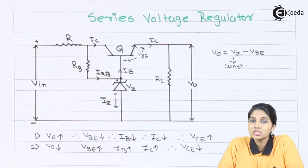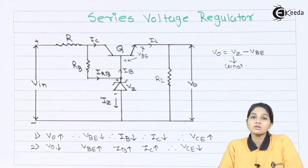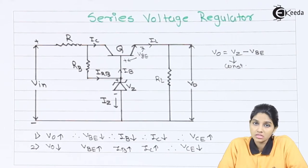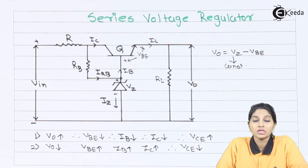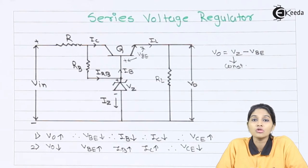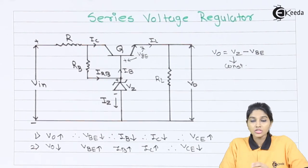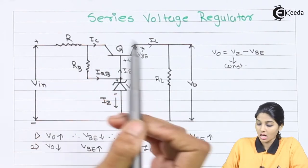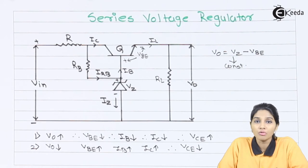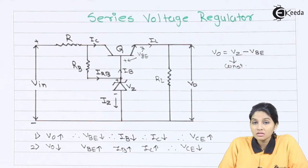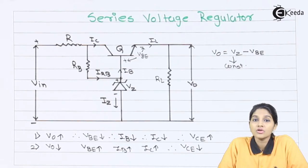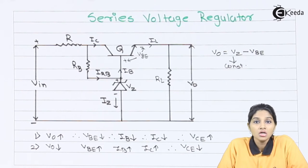This is how the transistorized series voltage regulator operates. The circuit has advantages as well as disadvantages. As the series pass transistor always operates in the active region, it dissipates a maximum amount of power, requiring the transistor to be mounted on a heat sink, which makes the circuit bulky. Another disadvantage is that using a current-limiting resistor, Zener diode, and transistor provides more heat dissipation. Also, no protection is provided against short circuits, and there is a variation in output voltage with changes in temperature.